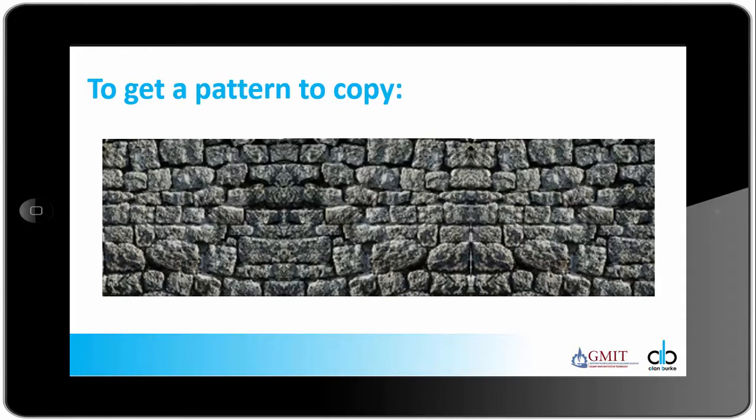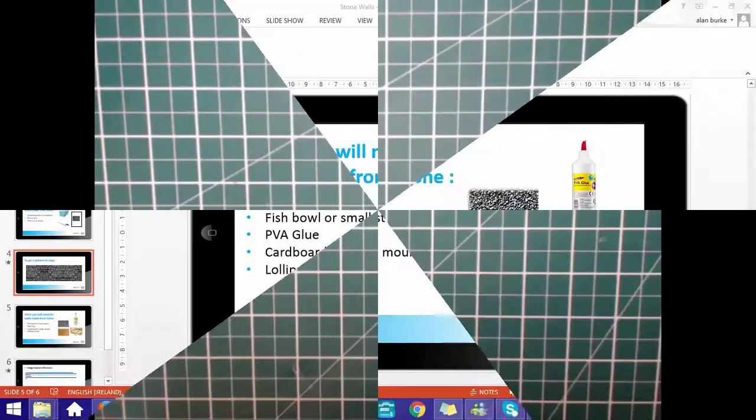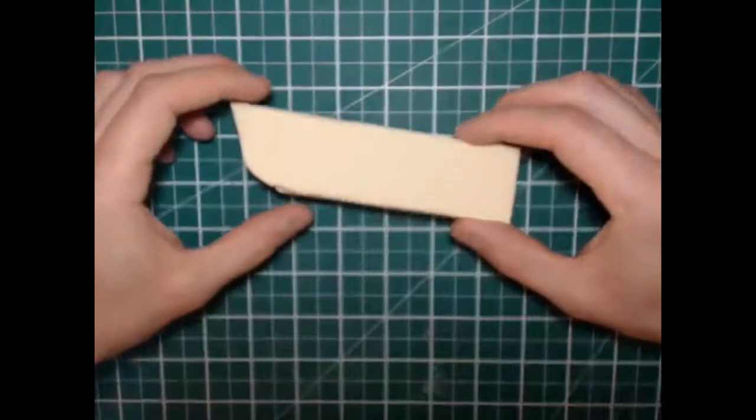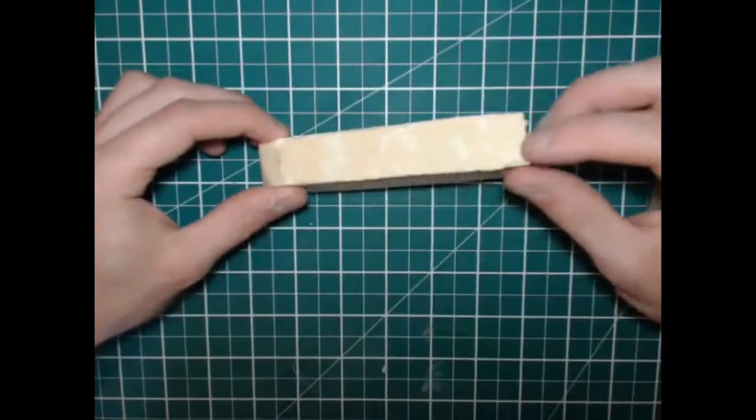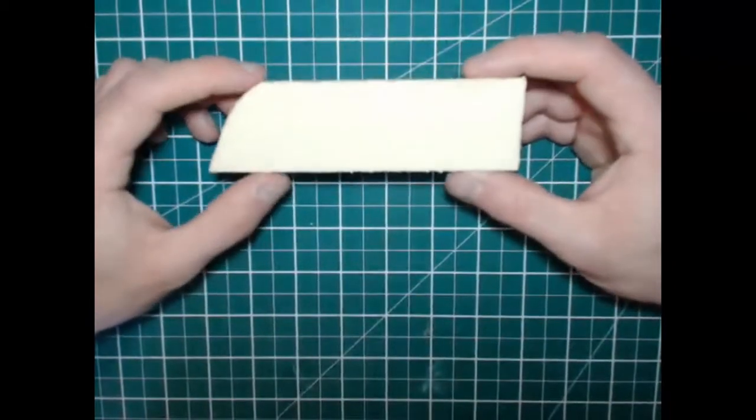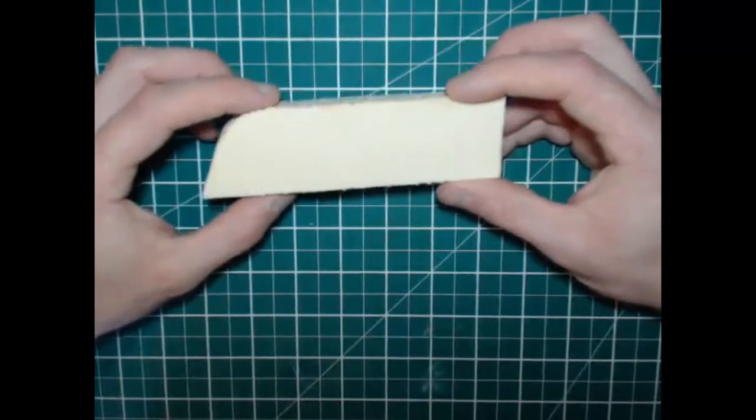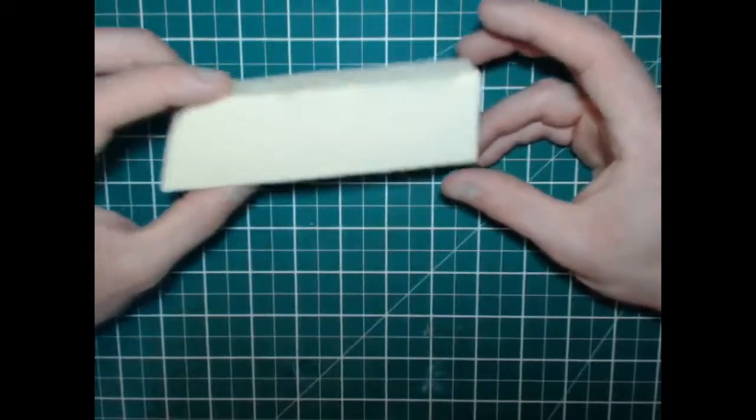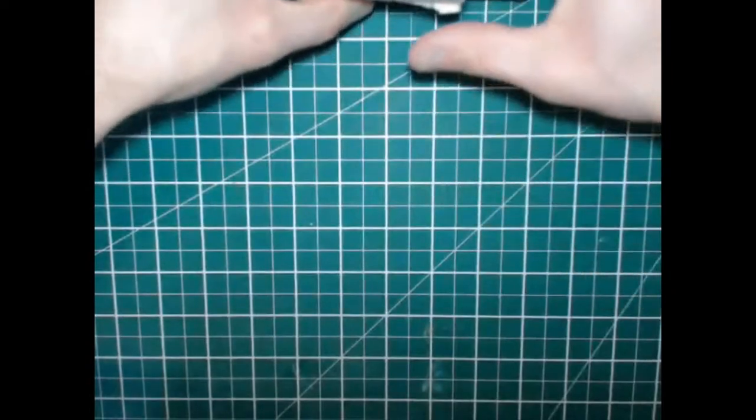I will now show you the technique for modeling stonework from foam. Now I am going to show you how we can model some stone and brickwork from insulation foam. That is the same type of insulation foam that you might use for the landscaping part of the model, and it is relatively easy to get and it works out very well for engraving and carving some stonework.